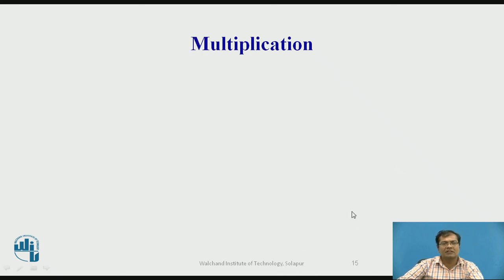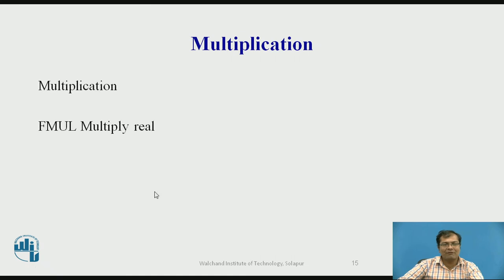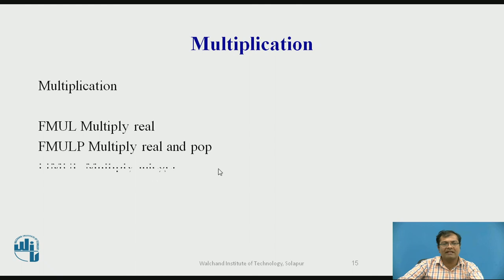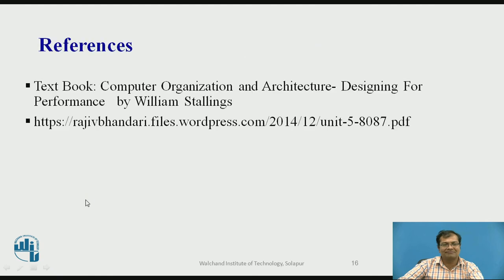The last arithmetic operation is multiplication: FMUL — multiply real; FMULP — multiply real and pop; FIMUL — multiply integer. These are the references for this session.